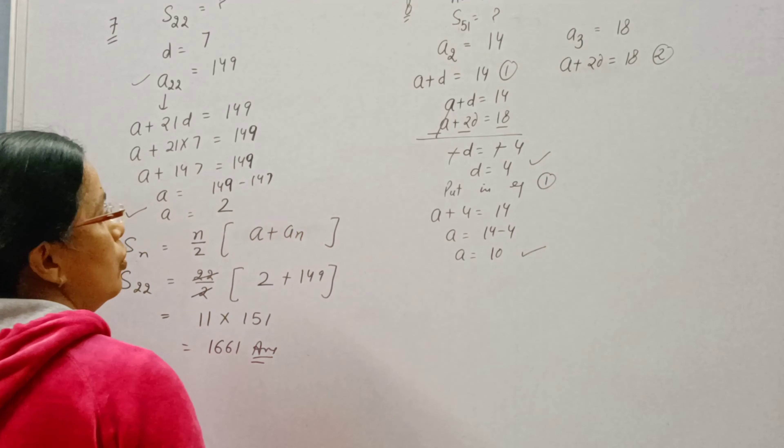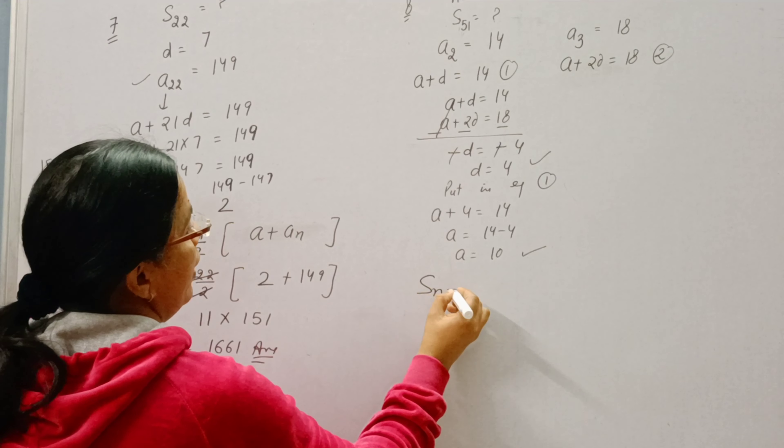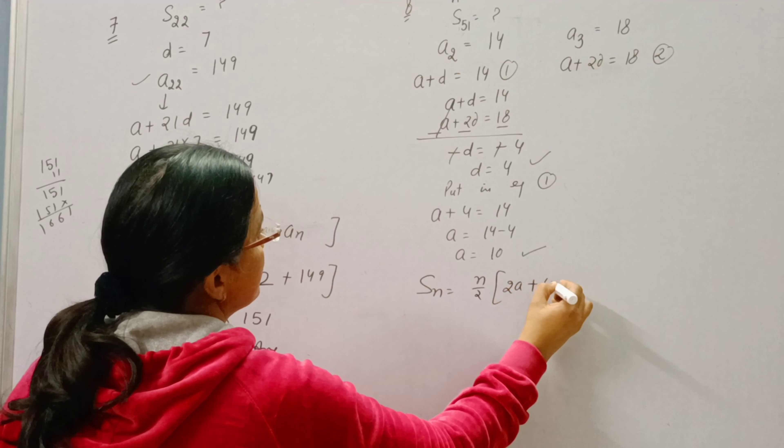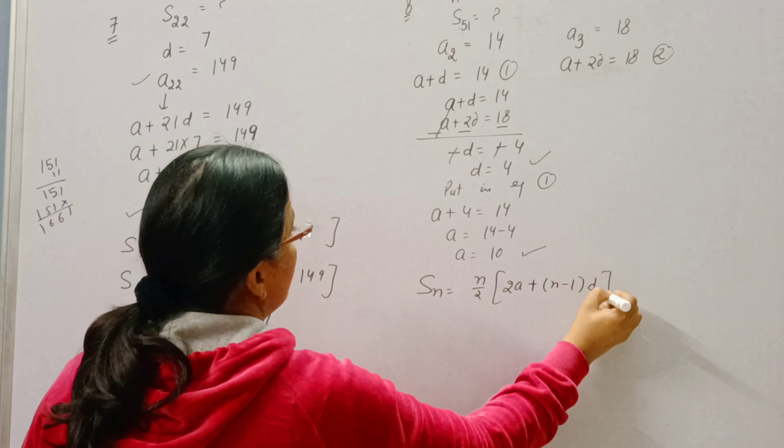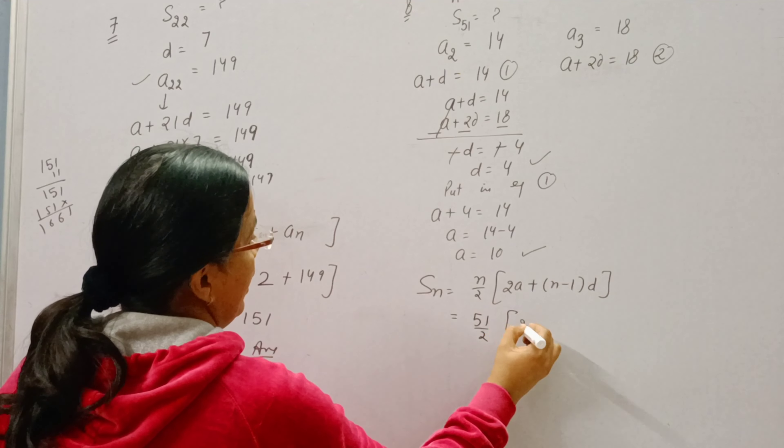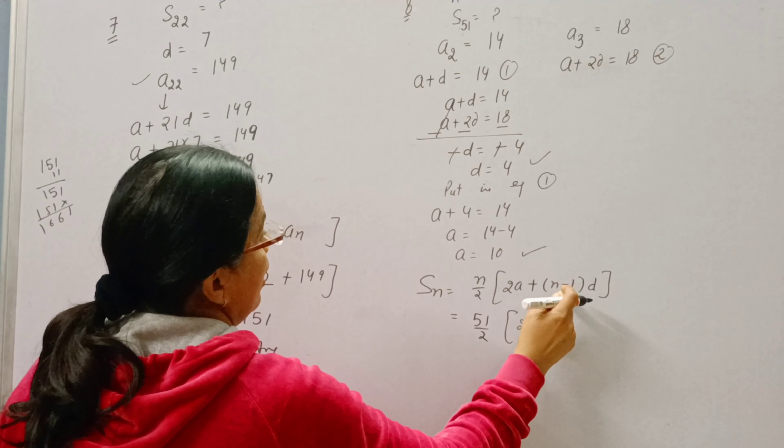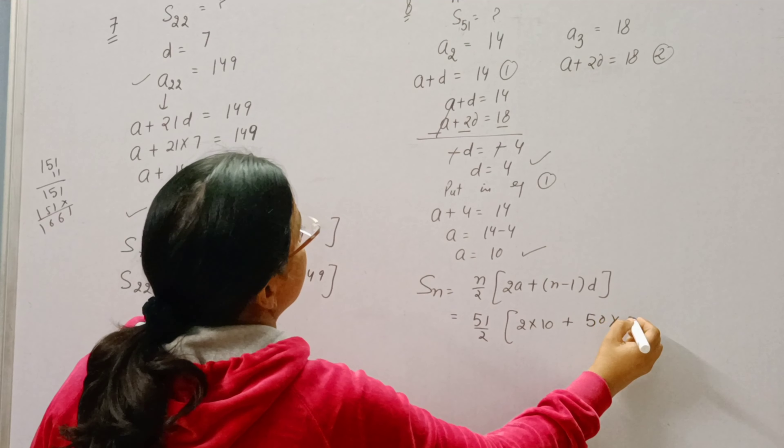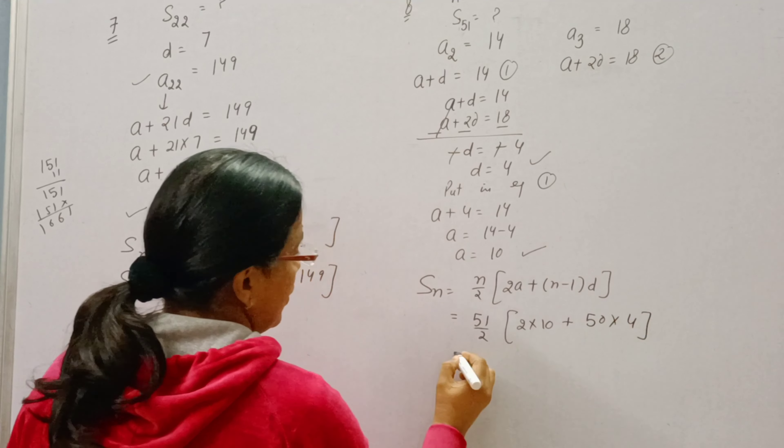Now A is known and D is known, so we can apply the formula of SN: N by 2 into 2A plus N minus 1 D. Here N is 51, A is 10. N is 51, 51 minus 1 is 50, and D is 4.